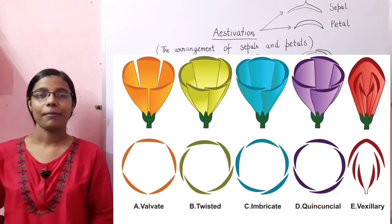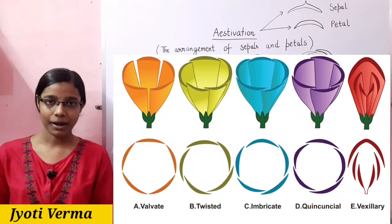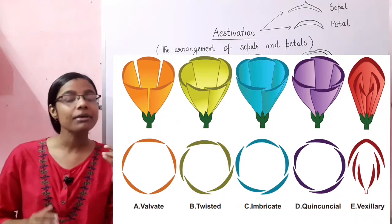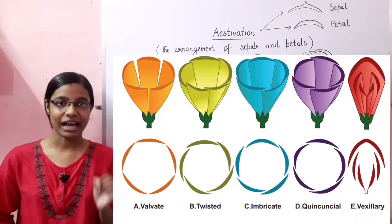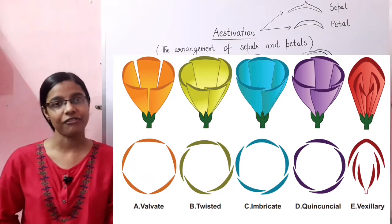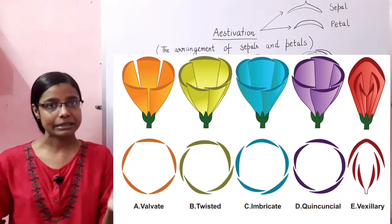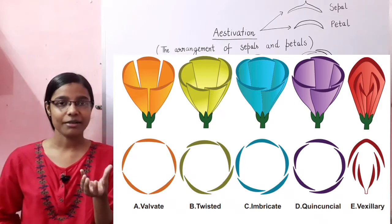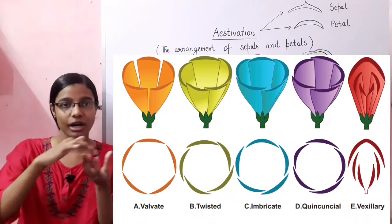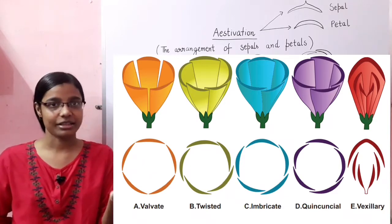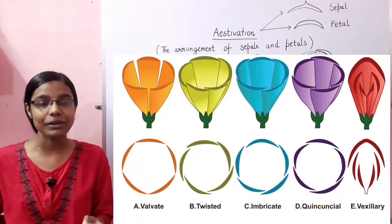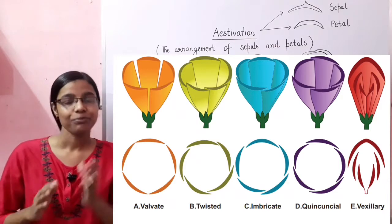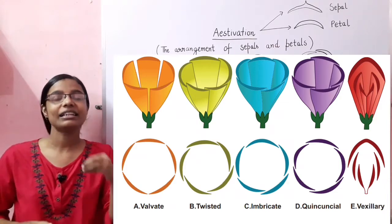Hello everyone, welcome to my channel all about biology. This is Jyoti Varma. Today we are going to talk about Estivation. Estivation is used in taxonomy and it is a very important topic whether it is BSc Botany or MSc Botany. Estivation is simply the arrangement of sepals and petals within a floral bud.